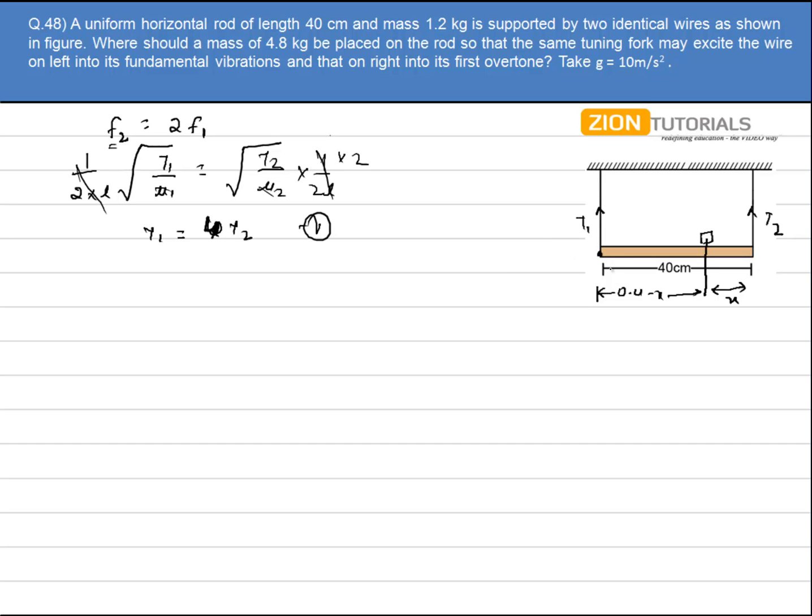Now secondly, balancing the moment about this very point, so I can write 1.2 at a distance of 20 centimeter, that is 0.2, plus 4.8 that is placed at a distance of 0.4 minus x, that is equal to t2 and that is at a distance of 0.4.